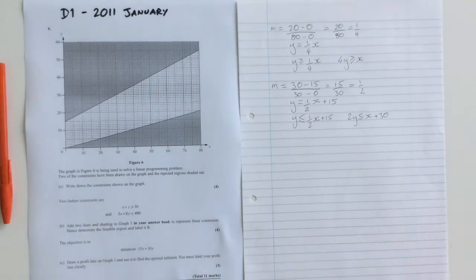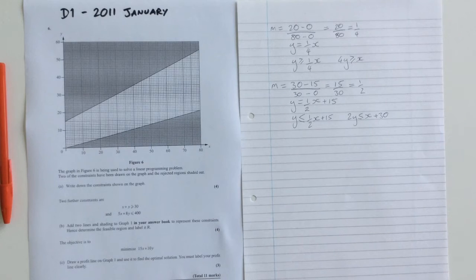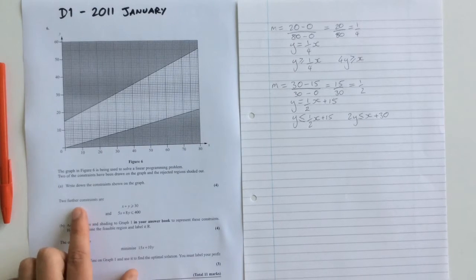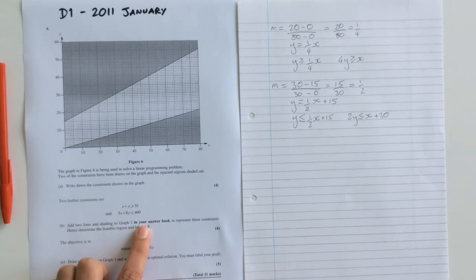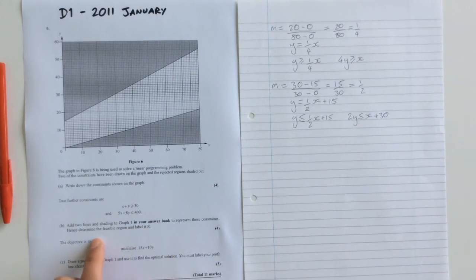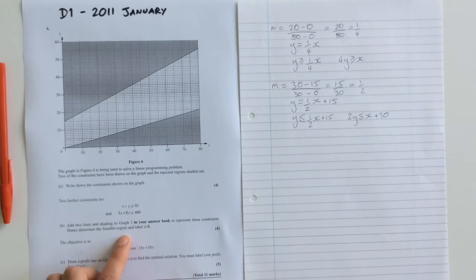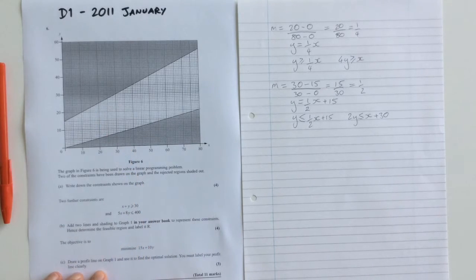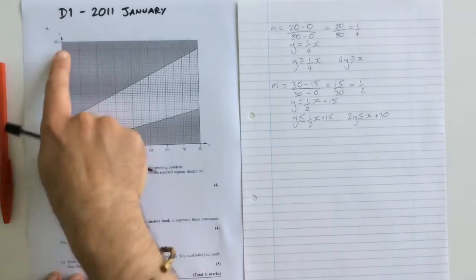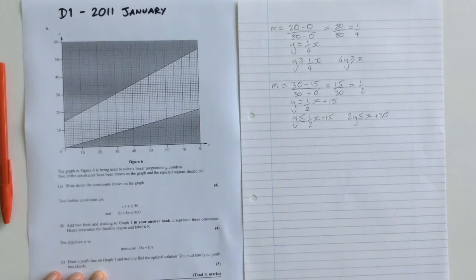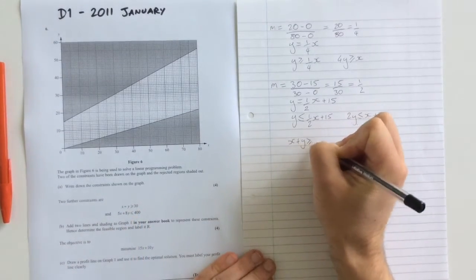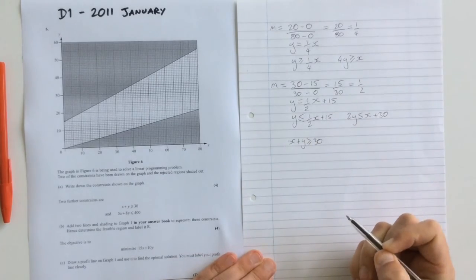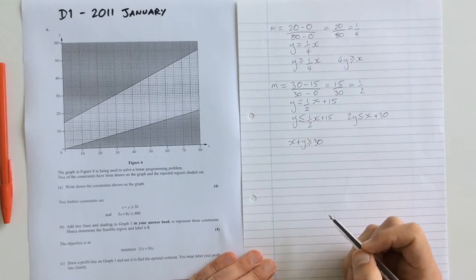For the next part of the question, we're given two more constraints and we're asked to add lines and shading to the graph in the answer book to represent the constraints and determine the feasible region and label it R. Well, I'm going to do it on here rather than printing out a second page, but this is exactly the graph that you were given in the answer book. So I'm going to take them one at a time, starting with this equation, x plus y is greater than or equal to 30. And of course, the way I'm going to do this is I'm going to work out the coordinates of some endpoints.